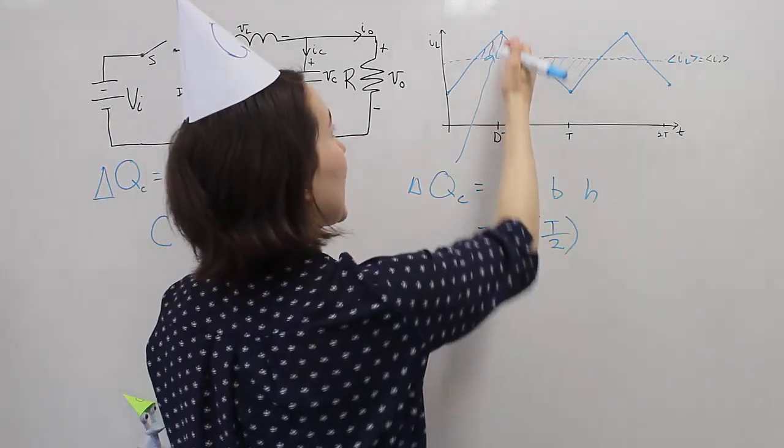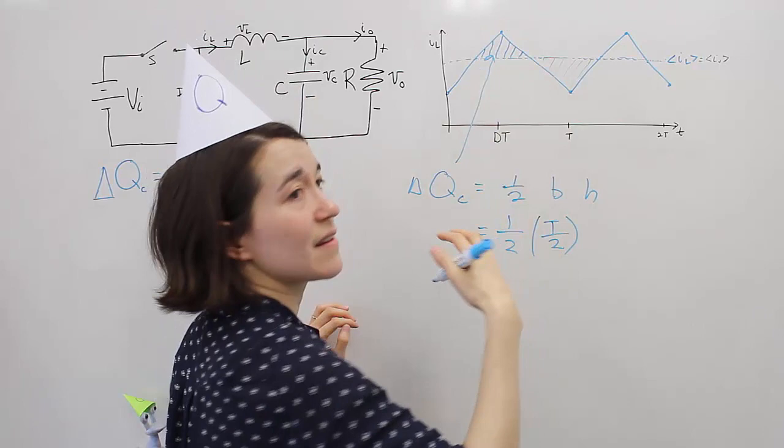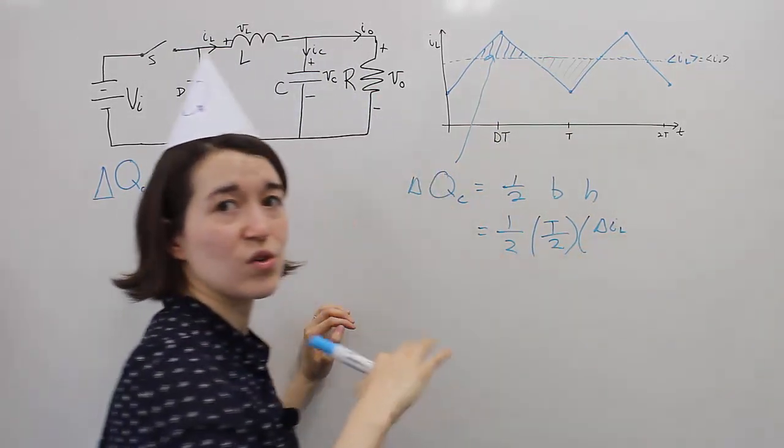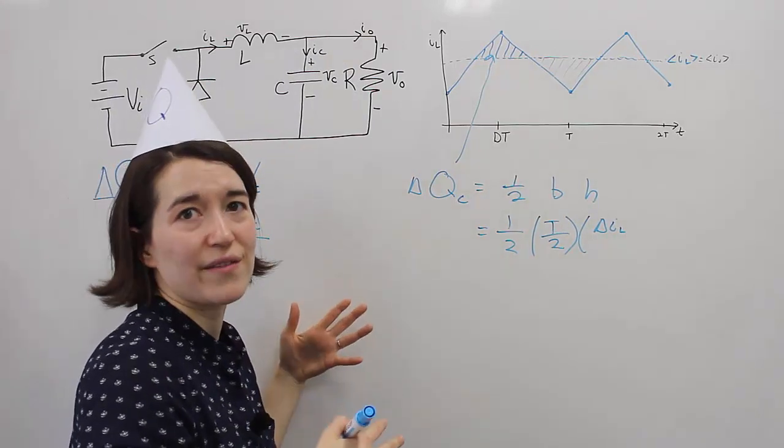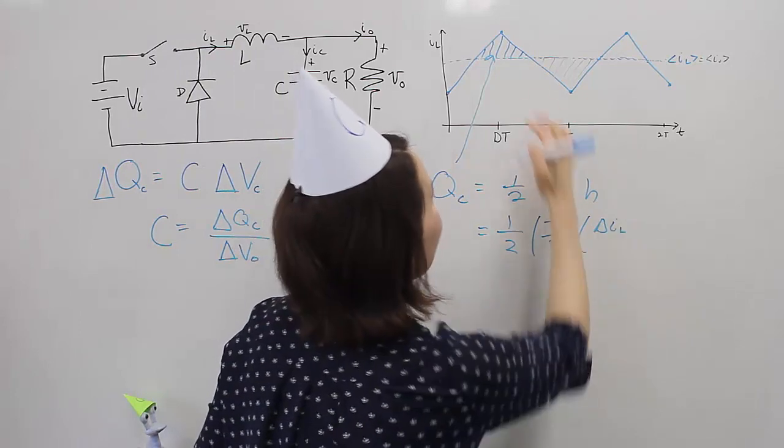Then we multiply by the height. We know that this total height, the difference here is the change in the inductor value, so your inductor ripple. You do need to know that value already, or calculate it, but you can do that.